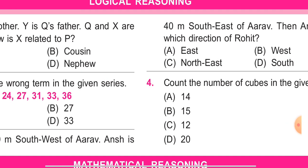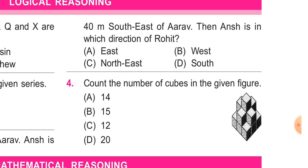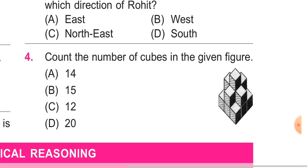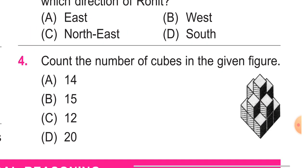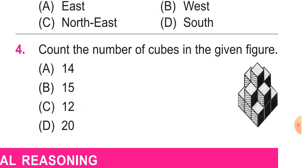Question number 4: count the number of cubes in the given figure. First one, two, three here and three here, so three into three that is nine. On top here, one, two, three, four, and then five. Nine plus five is fifteen, and one on top makes fifteen. So the option is correct, fifteen number of cubes.